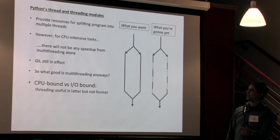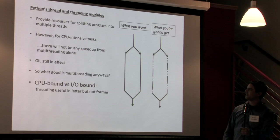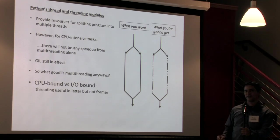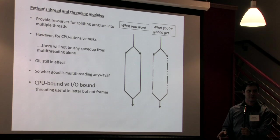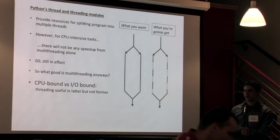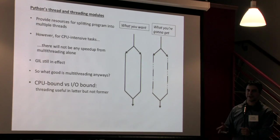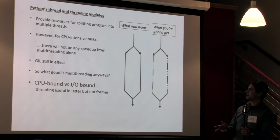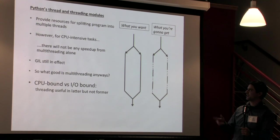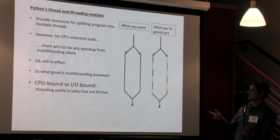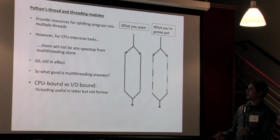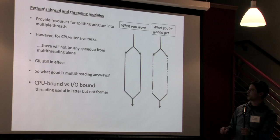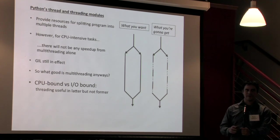So first let's dig around the standard library and what you might find are Python's thread and threading modules. Thread is a module that has the low-level tools that you need to split your code apart to different threads. Threading is a higher level interface to this that makes it easier to use. If you're actually doing any type of multi-threading probably all you need is the threading module for this. But this provides resources for splitting your program into multiple threads.